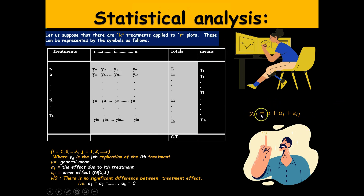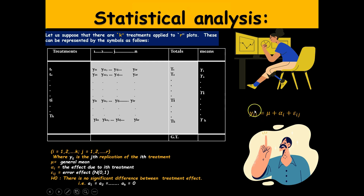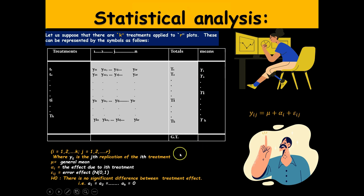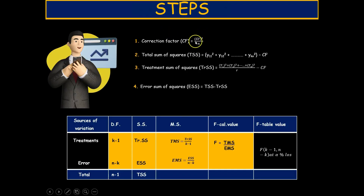The statistical model for CRD is: Yij = μ + αi + εij, where Yij is the j-th replication of the i-th treatment, μ is the general mean, αi is the effect of the i-th treatment, and εij is the error effect. The ANOVA in CRD decomposes the overall variation of the response variable into two components: one due to treatments and another due to error. The F-test is used to determine whether we can reject the null hypothesis that there is no significant difference between the treatment effects T1, T2, T3, ..., Tk.